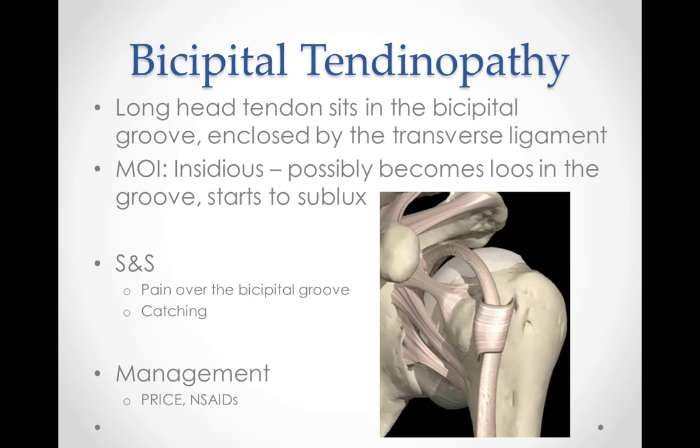Biceps tendinopathy is common in sports that involve throwing, swimmers, gymnasts, and some contact sports. Occupations that involve overhead shoulder work or heavy lifting are also at risk. Sufferers commonly report pain in the region of the anterior shoulder over the bicipital groove, occasionally with radiating pain down to the elbow. Overhead activities usually reproduce pain, especially in positions that combine abduction and external rotation, such as cocking to throw. Pain is often aggravated by shoulder flexion, forearm supination, or elbow flexion. Some patients describe muscle weakness and clicking or snapping with shoulder movements. Symptoms are typically alleviated by rest and ice.